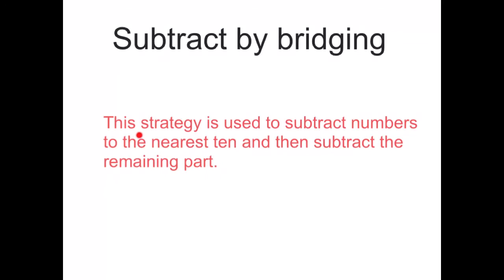So what is the strategy? This strategy is basically used to subtract numbers to the nearest 10 and then to subtract the remaining part. I know that sounds really confusing and I'm going to go through it. At the moment, if you're using the counting back strategy to solve subtraction, that's really great, but we need to learn some more strategies if we're going to move up to the next level. So let's get started.